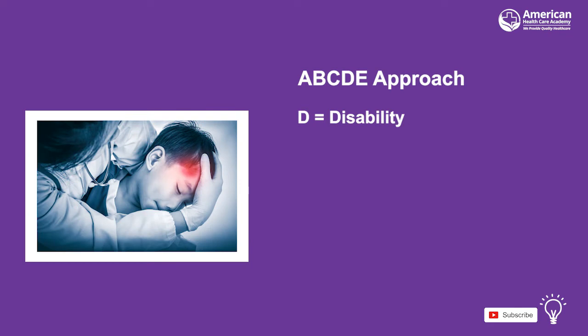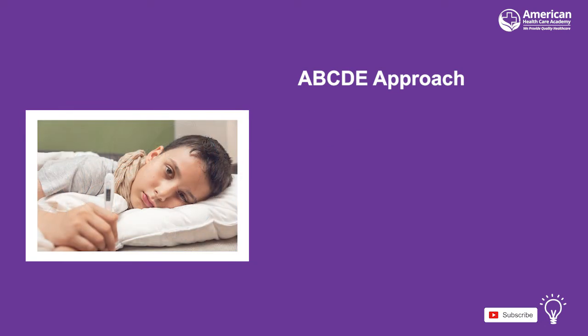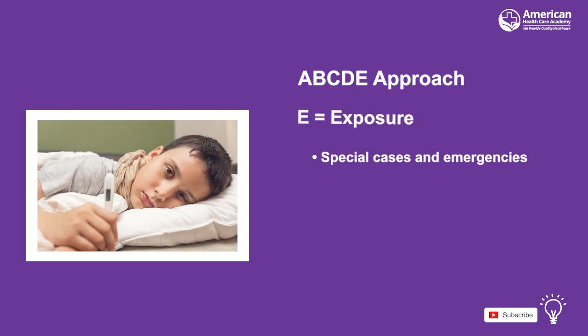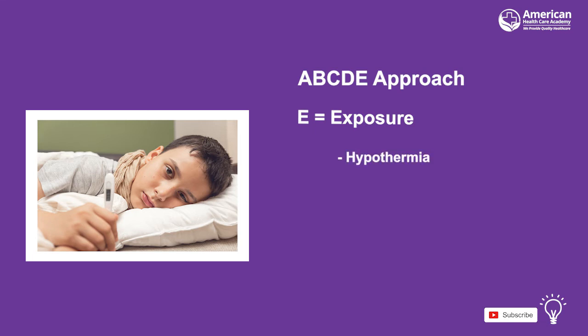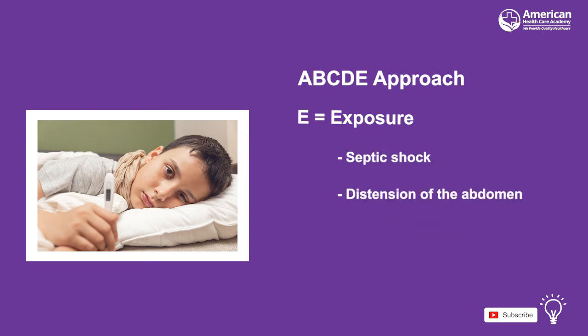D is for disability, which is usually noticeable during or right after the general assessment. When a child presents no response or is unconscious, immediate attention must be given. E is for exposure. For special cases and emergencies, immediately check for signs of exposure so the child may receive specific care immediately. Signs may include hypothermia, massive bleeding, petechia, purpura, septic shock, and distension of the abdomen.